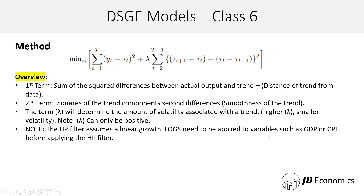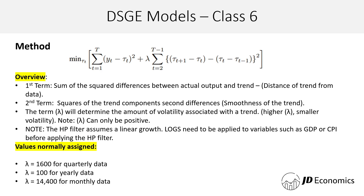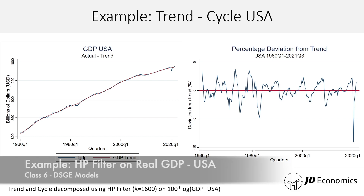It's important to mention that the HP filter assumes linear growth, so logs will need to be applied to certain variables such as GDP or CPI before applying the HP filter. Some of the standard values assigned to lambda are 1600 for quarterly data, 100 for yearly data, and 14,400 for monthly data. You can practice with the code and change the values of lambda — the bigger the lambda, the smaller the volatility in the series.